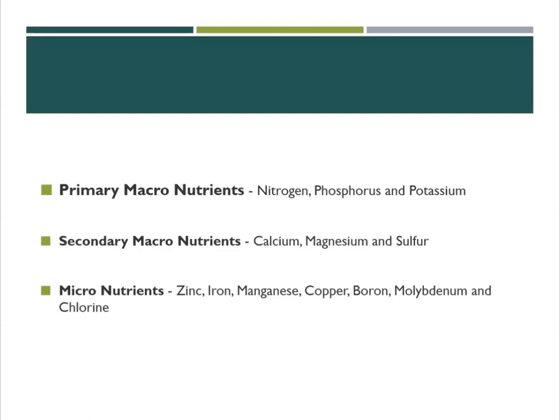Third is the micronutrients, which are nutrients the plants need in small amounts. These include zinc, iron, manganese, copper, boron, molybdenum, and chlorine.